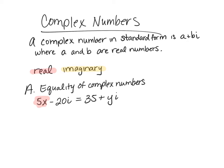Well the real part has to equal the real part of the other side. So we get 5x equals 35, so x equals 7. And then we have our imaginary part negative 20i equals yi.